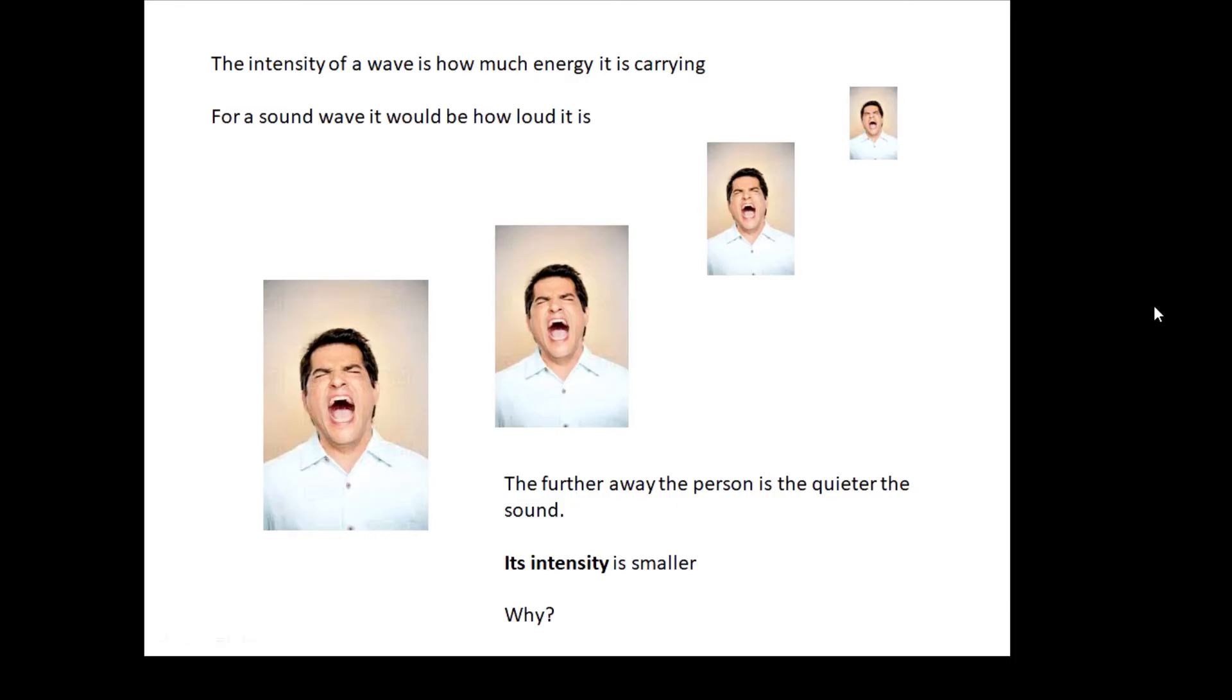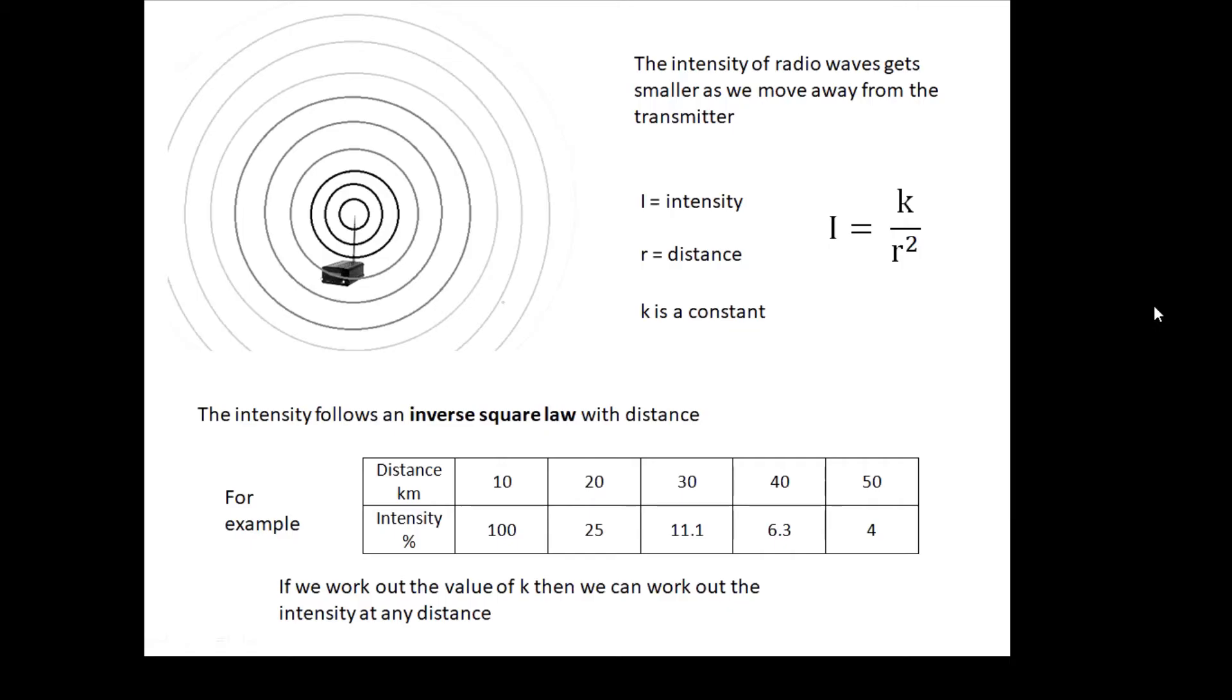Now its intensity is smaller. Why? Because as a wave travels, its energy gets spread out more and more. Its energy has to cover a bigger area, so its energy becomes more dilute. The intensity gets less and less because the energy of the wave becomes more spread out as it travels away.